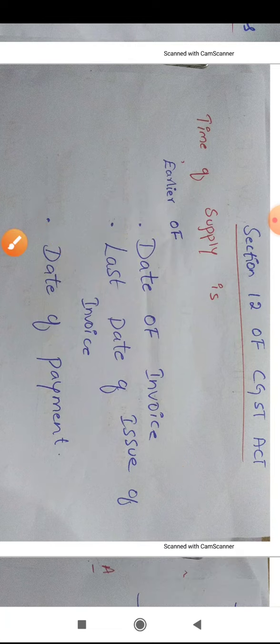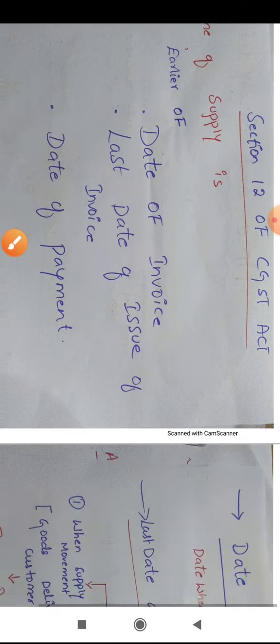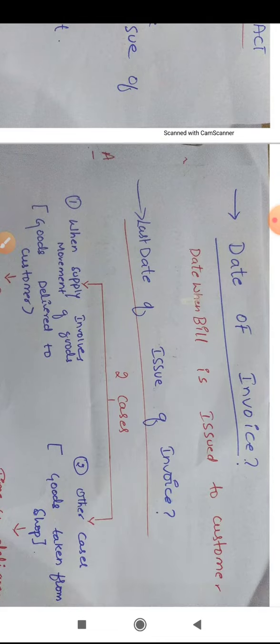First, let's discuss what is the date of invoice. The date of invoice is the date when the bill is issued to the customer. For example, X is sending goods to Y in Mumbai. Whenever he sends the goods, he makes a bill, a voucher, an invoice — the date mentioned on that bill is called the date of invoice.